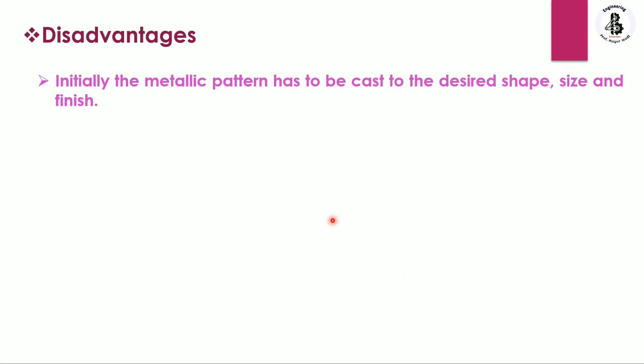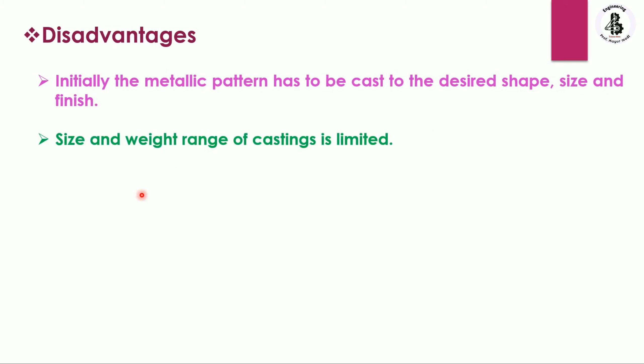Some of the limitations or disadvantages are: initially the metallic pattern has to be cast to the desired shape, size, and finish. Second, the size and weight range of castings is limited due to the many movements required to make the shell mold. Additionally, the process generates noxious fumes which are hazardous to operators.